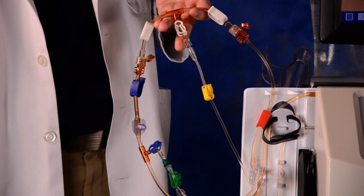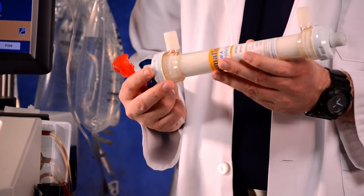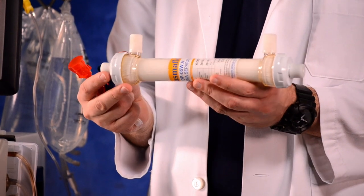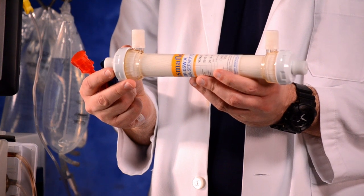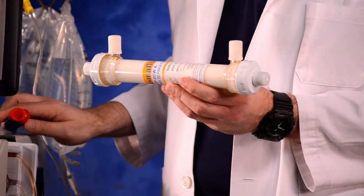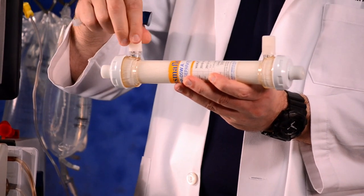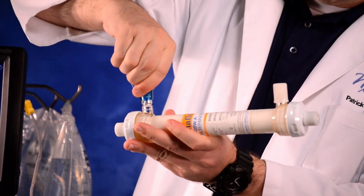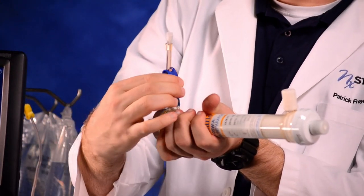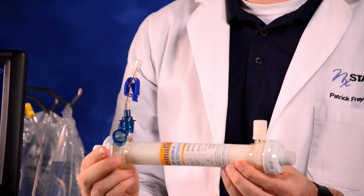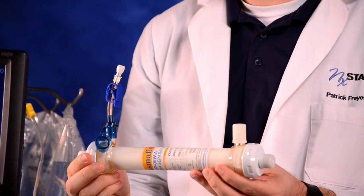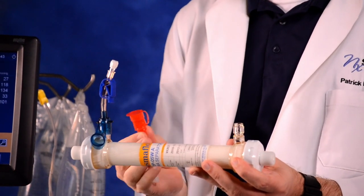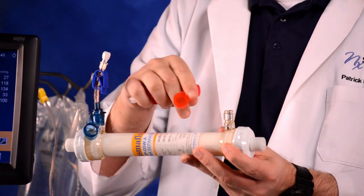You are now ready to attach the plasma separator. Remove the plasma separator from its package. Hold the filter so you can read the labeling. Turn the filter so that the side ports are upright. Remove the cap from the plasma outlet top side port. Attach the blue Hansen connector and clamp. Seat fully to prevent leaks. Continue holding the filter so that the side port is upright and remove the cap from the remaining outlet bottom side port. Attach the red Hansen connector, seat fully, and clamp.